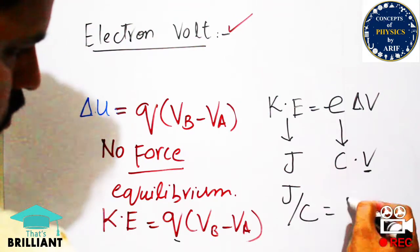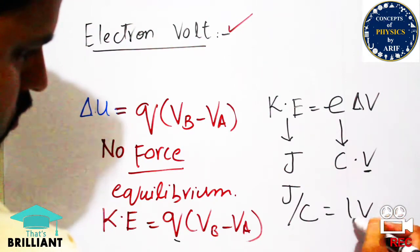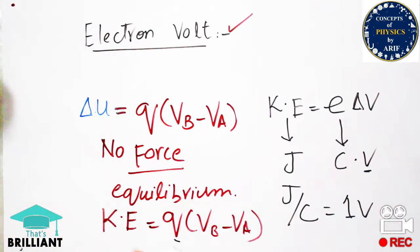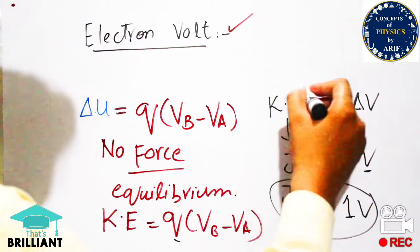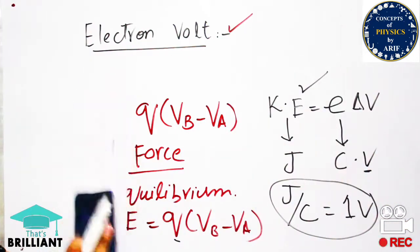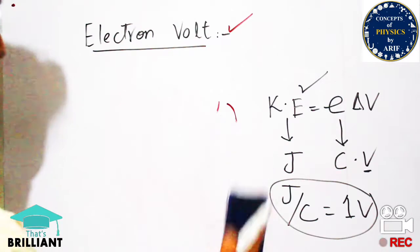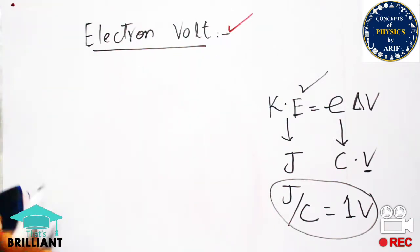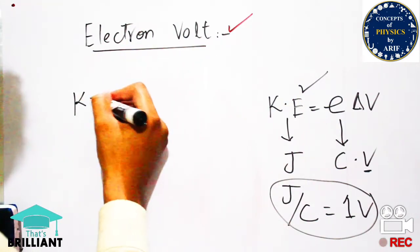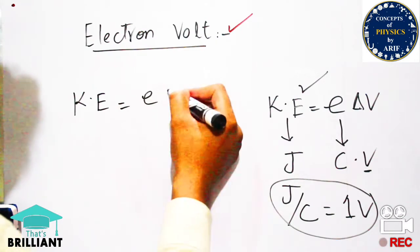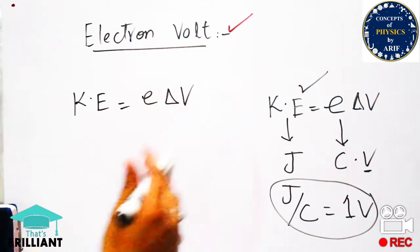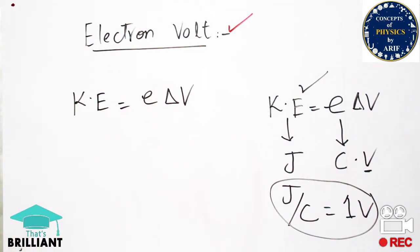The kinetic energy has a unit of joule. The electron charge has a unit of coulomb, and delta v has a unit of volt. One volt is equal to joule per coulomb, meaning one volt of potential represents one joule of work done on a body carrying one coulomb of charge. So kinetic energy equals e into delta v.